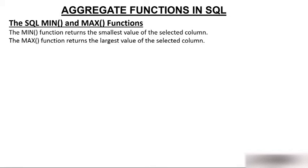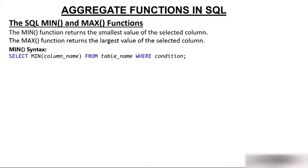First we'll discuss minimum and maximum functions. The minimum function returns the smallest value of the selected column. The maximum function returns the largest value of the selected column. The syntax is: SELECT MIN(column_name) — the column name could be salary or even name, since you can apply minimum on numeric values as well as alphabetic values.